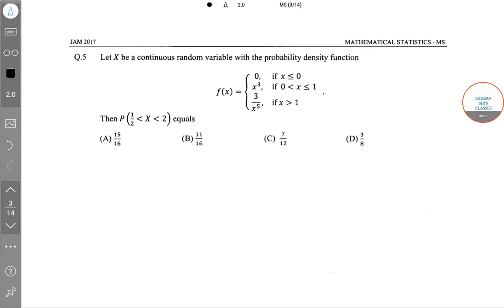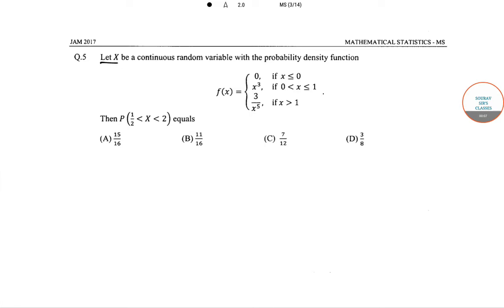Hello students, welcome to Sorosers classes. The question is: let X be a continuous random variable with the probability density function which is given as this. Then probability X greater than half and less than two equals.